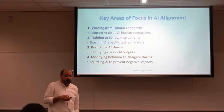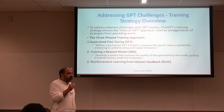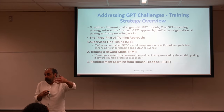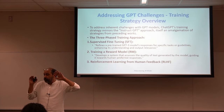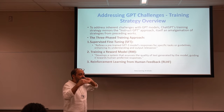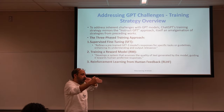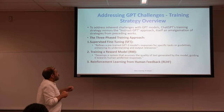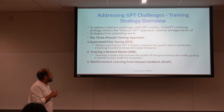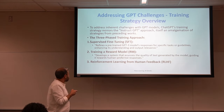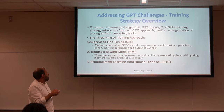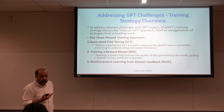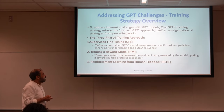To make a model follow instructions using human feedback, we go through three steps. First is supervised fine-tuning (SFT) — you already have a GPT pre-trained on some dataset with the ability to predict the next token. The second step is training a reward model, and the third step is RLHF. These three steps will be covered one by one.